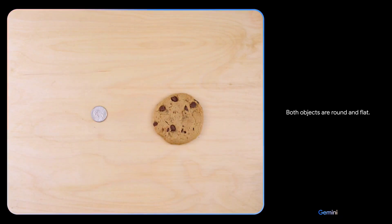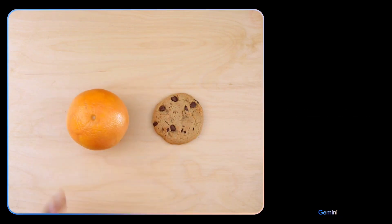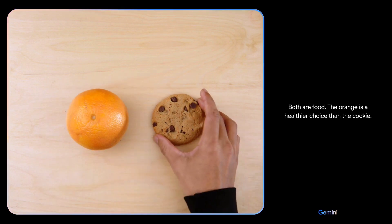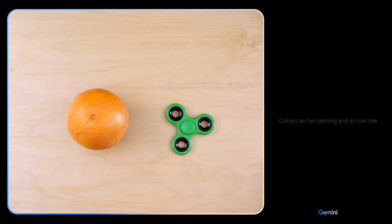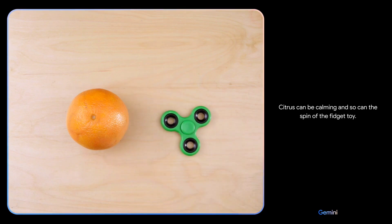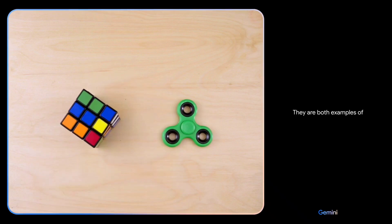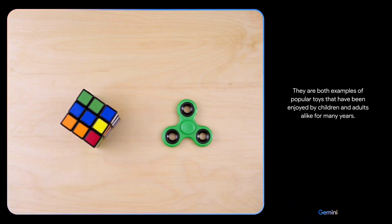Both objects are round and flat. There you go. Both are food. The orange is a healthier choice than the cookie. Citrus can be calming and so can the spin of the fidget toy. They are both examples of popular toys that have been enjoyed by children and adults alike for many years.